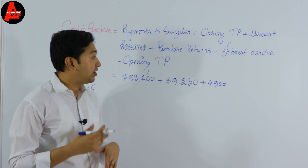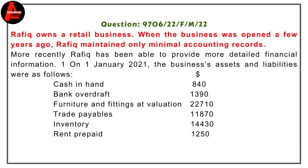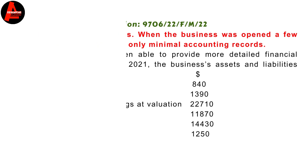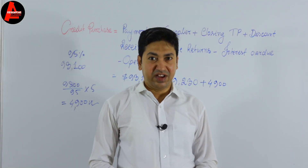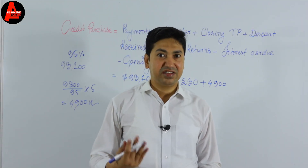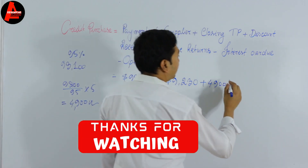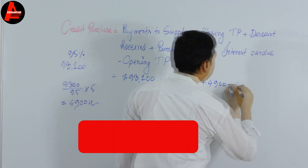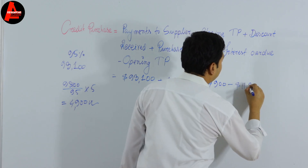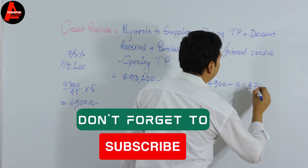Now for opening trade payables. On 1st January 2021, the business's assets and liabilities included trade payables of $11,870. Since 1st January 2021 is the beginning of the financial period, this is clearly the opening balance. We subtract this: minus $11,870.